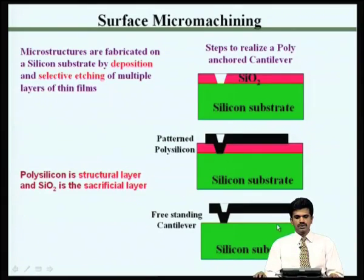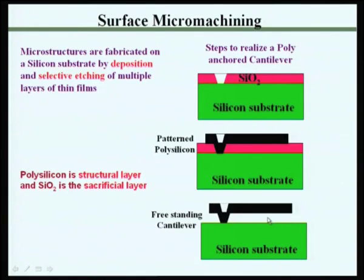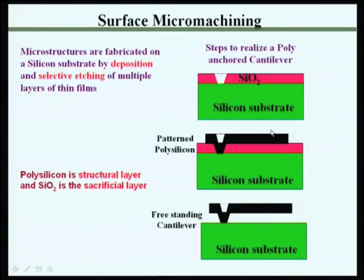In surface micromachining, what we do is that we build structures like cantilevers, beams and other structures on top of the silicon wafer. To do that, we will have to go through several process steps of depositing silicon dioxide, depositing polysilicon which is going to be the structural material, and then patterning both of these. The polysilicon in this particular instance is going to be the structural material for the cantilever and hence that is called the structural layer.